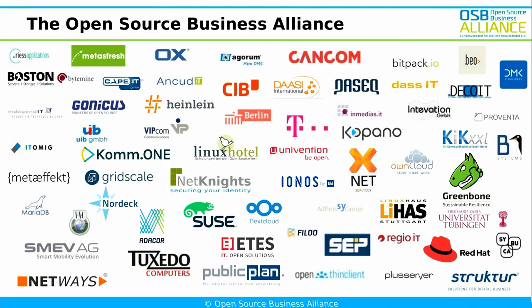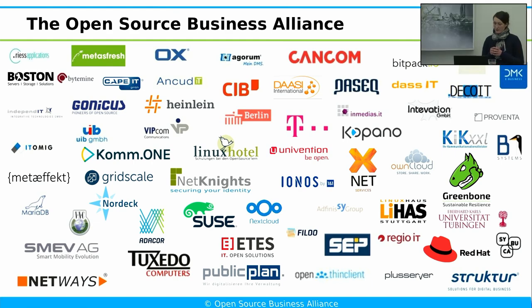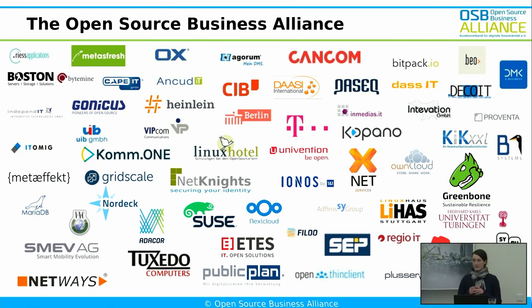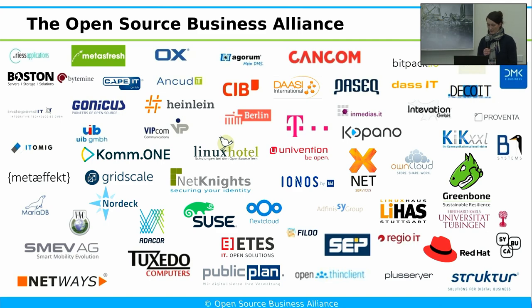We are a business association with roughly over 200 members right now. The members are companies that produce FOSS or that sell corresponding services. Our members that we represent are small and medium enterprises, and there are also some cities or counties, municipalities and IT service providers who are members — like, for example, the city of Munich. We also have some universities, research institutions and individuals. And in the Open Source Business Alliance, we have different working groups, one of which works specifically on questions of procurement.